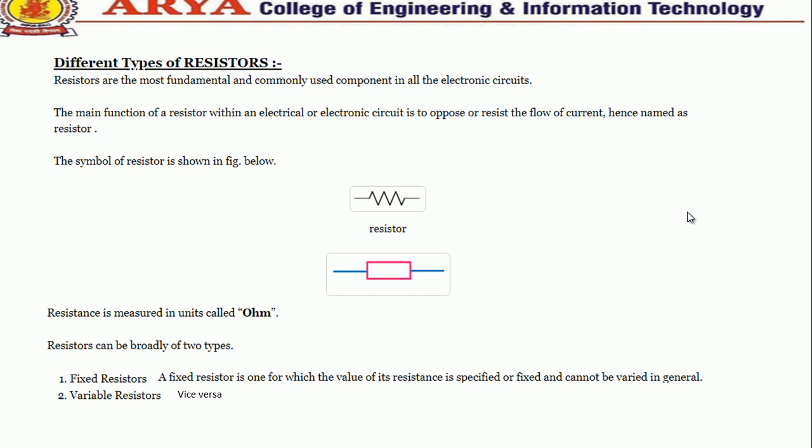Resistance is measured in units called ohms. Resistors are categorized into two types: first is fixed resistors and second is variable resistors. Fixed resistors are those for which the value of resistance is specified or fixed and cannot be varied, but in the case of variable resistors we can change the value.